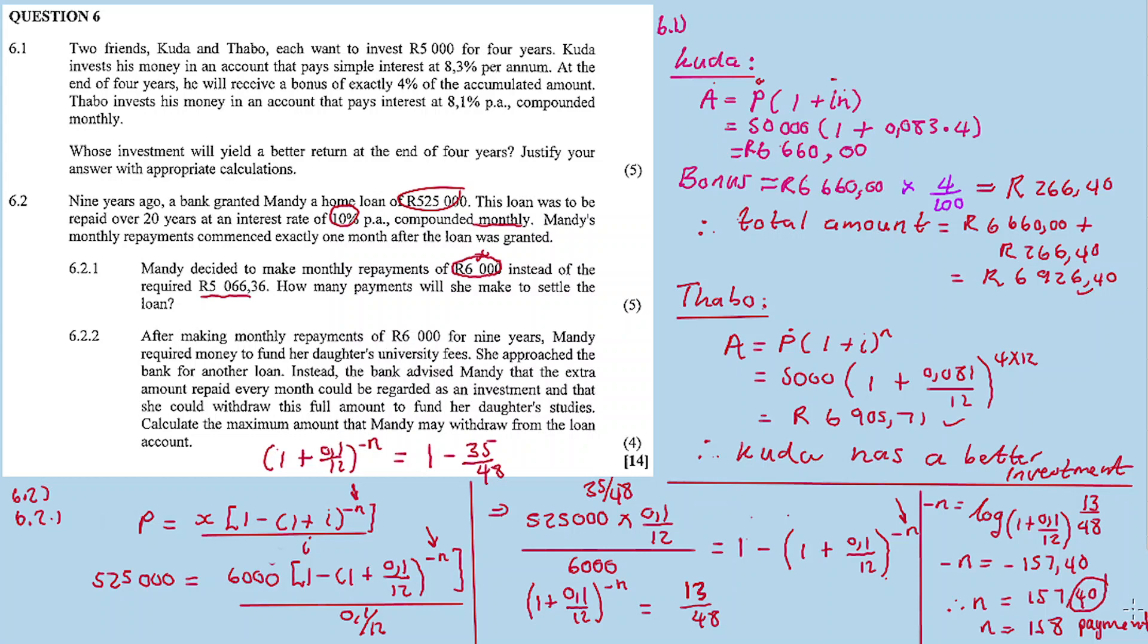When there's a decimal, even 0.3 or 0.4, it's not a full month but close enough to count as a repayment. So the answer is 158 repayments over the 20 year period.